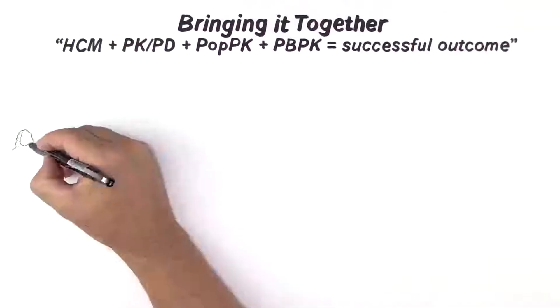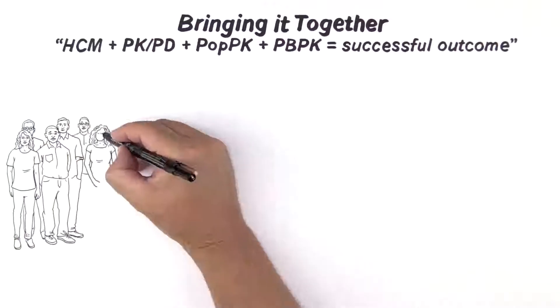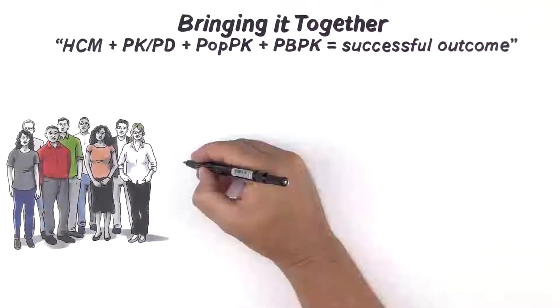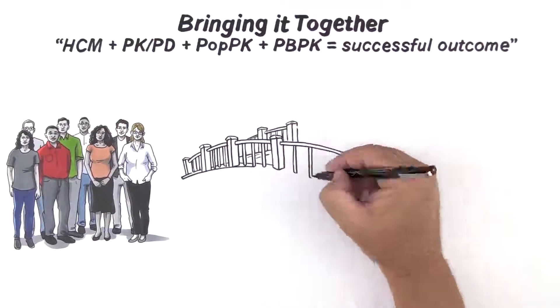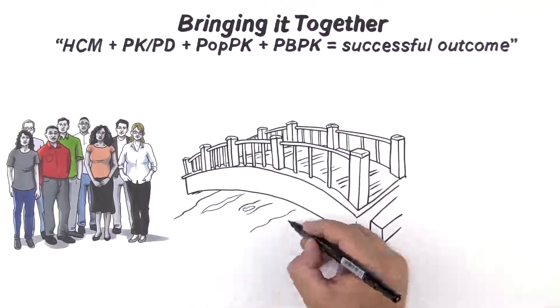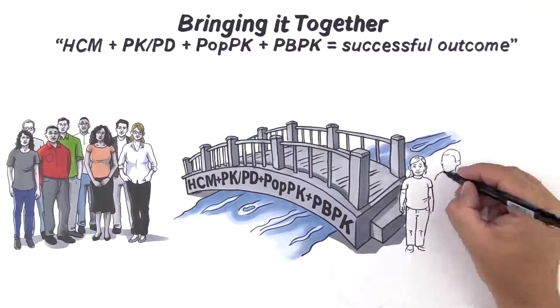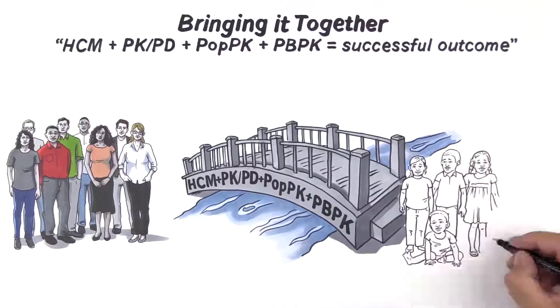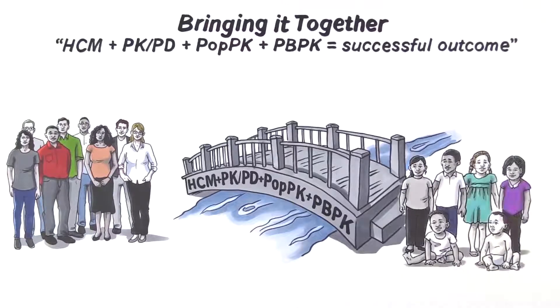Rich PK and PD data, coupled with other quantitative pharmacological methods such as POPPK and PBPK, assisted in predicting doses for study in children, which would be anticipated to yield therapeutic exposures in infants under the age of two years.